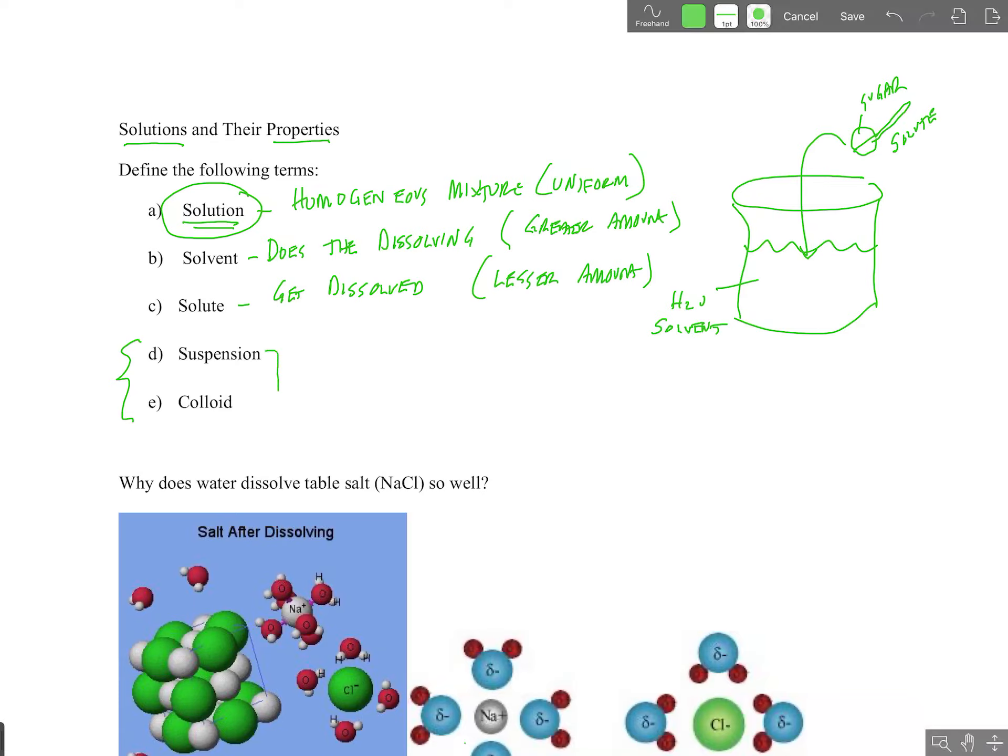So suspensions and colloids are both heterogeneous mixtures. That means they're not uniform throughout. The difference is suspended particles are so large that they will settle out upon standing. So suspended particles will settle upon standing, like sand and water.